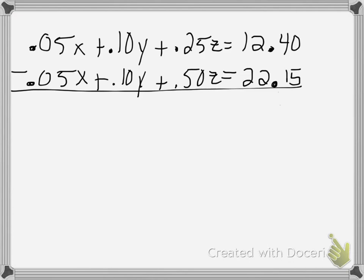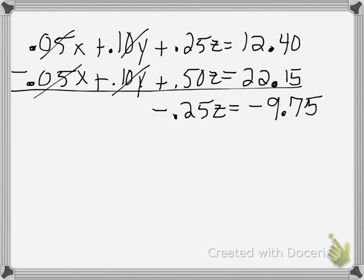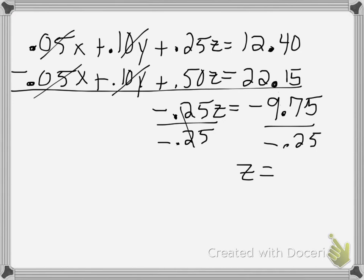What happens to my X's? They cancel out. What happens to my Y's? They cancel out. So I have 0.25 minus 0.50, which gives me negative 0.25Z, equals 12.40 minus 22.15, which is negative 9.75. Everyone good with that? How do I get Z by itself? Divide by negative 0.25 on both sides. So what do I get for Z? 39. So there's my Z.